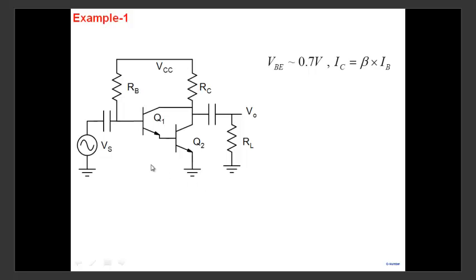It all depends on where you start when you see a circuit. In Example 1, VBE = 0.7V, so we immediately know this voltage is 0.7. If both junctions are forward biased, we know 1.4V. Once we know this, we get IB1, then IC1 through the beta relationship, then the base current of the next transistor, and therefore the collector current of Q2. The two currents add up to give the final current — all based on 0.7 and IC = β×IB.